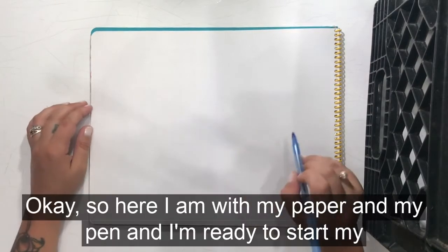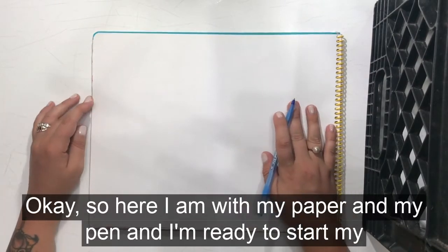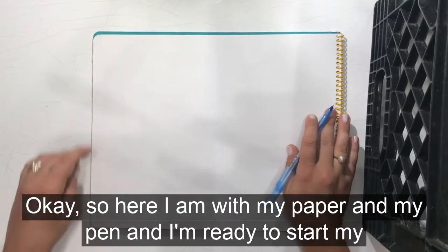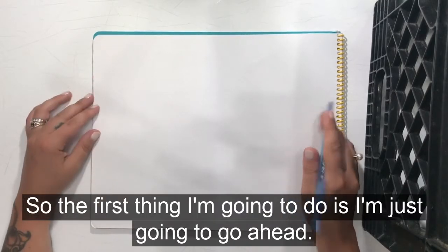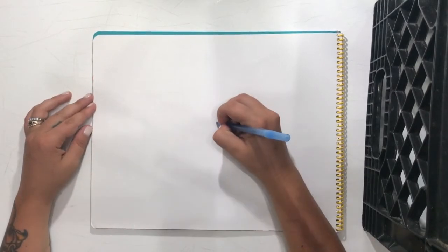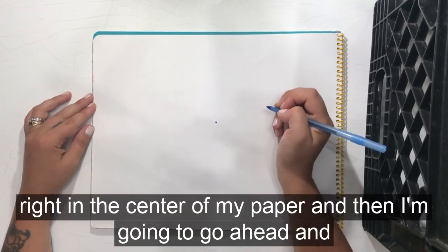Okay, so here I am with my paper and my pen, and I'm ready to start my drawing. The first thing I'm going to do is draw a dot right in the center of my paper.